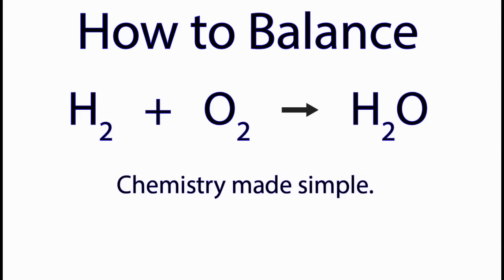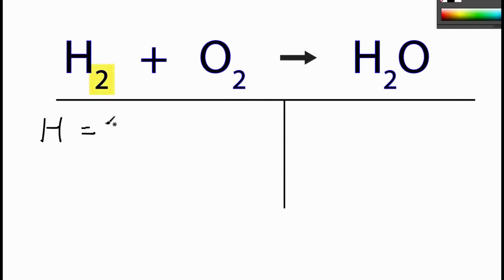To balance this equation, let's start by counting the atoms on each side. For hydrogen, we have 2, oxygen, we have 2,